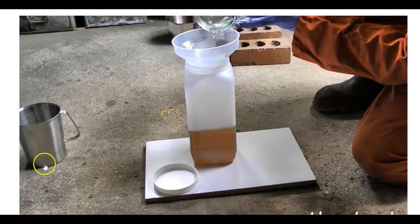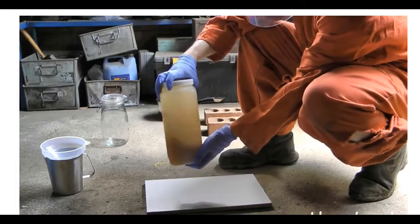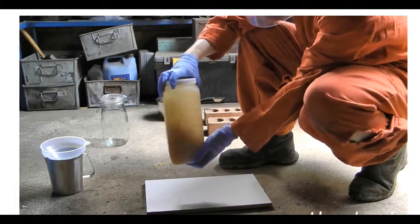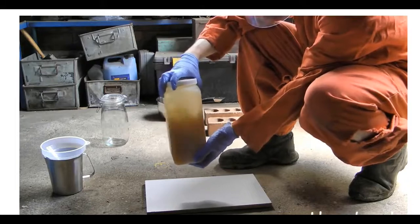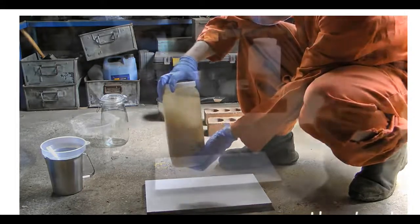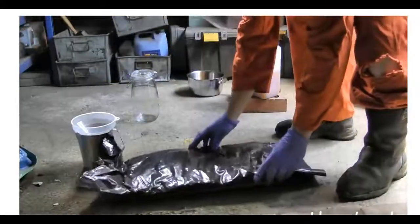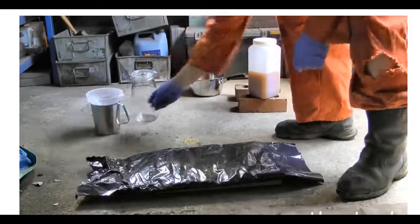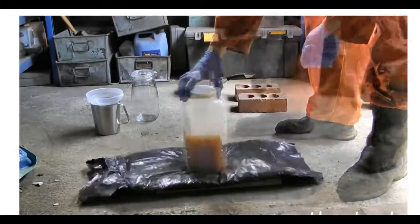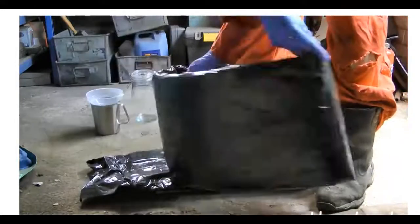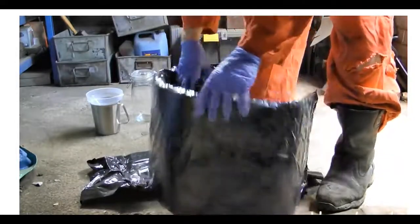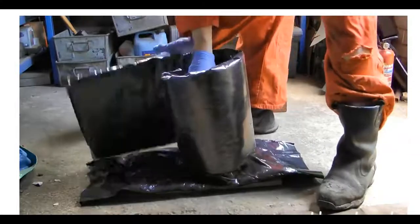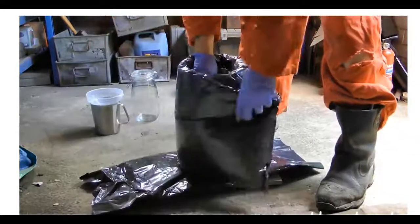He's shaking it together to help the reaction happen - increasing the surface area. When we look at rates, this is another way of speeding up the rate of the reaction. He wants it to stay as hot as he can for as long as he can because he wants all of the triglyceride to react.